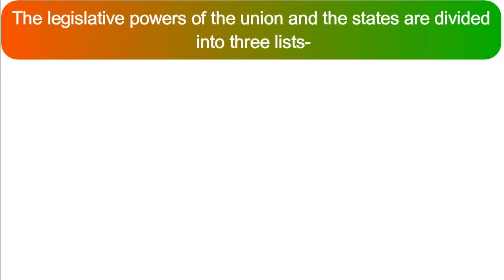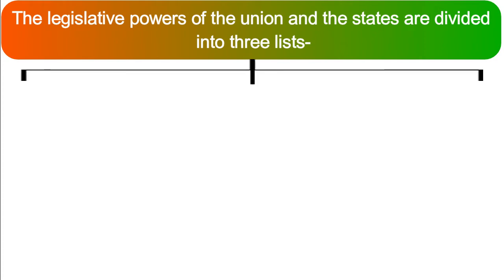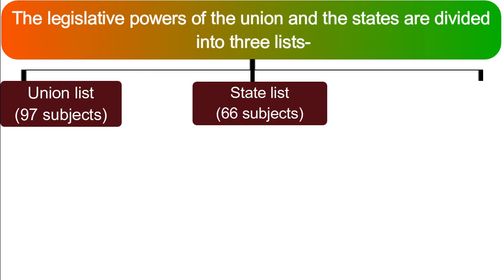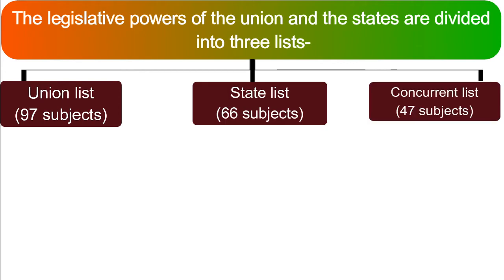Let us know about the legislative powers of the union and the states. They are divided into three lists: Union list, State list, and Concurrent list.